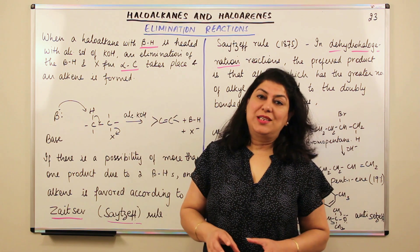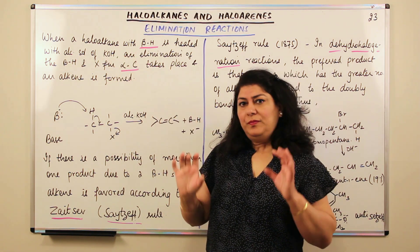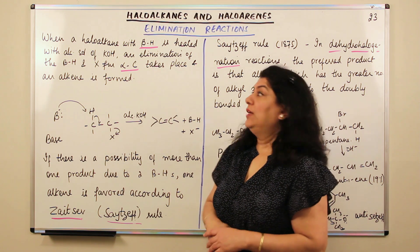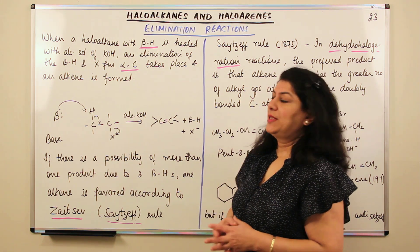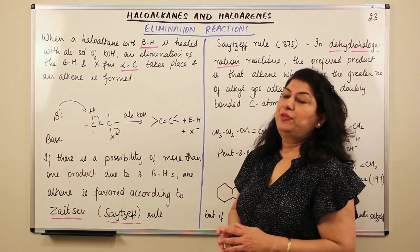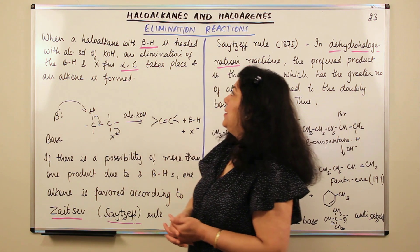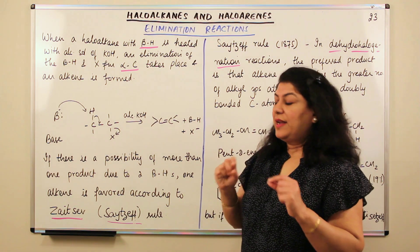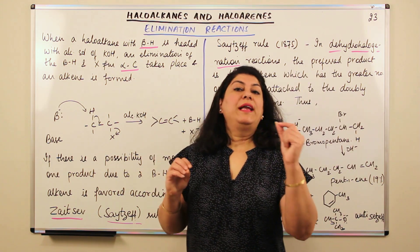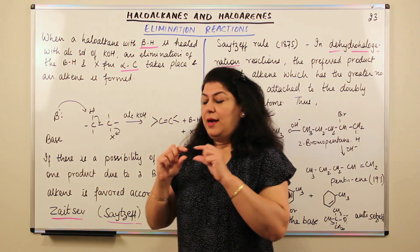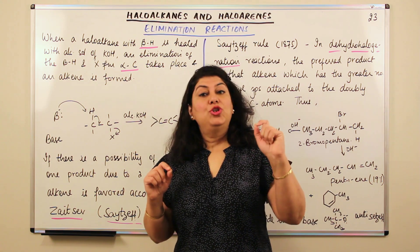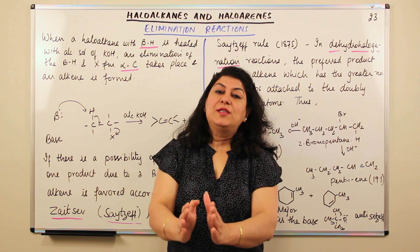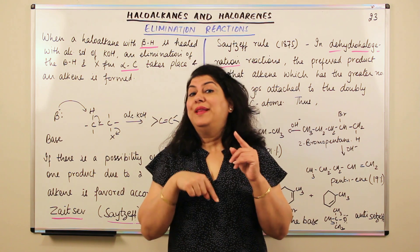Let me read this statement first so you can understand. When a haloalkane with a beta hydrogen is heated with an alcoholic solution of potassium hydroxide, an elimination of the beta hydrogen and the halogen from the alpha carbon takes place and an alkene is formed. In a haloalkane, the carbon to which the halogen is attached is known as the alpha carbon — it is the main carbon, and the properties of the compound depend on that halogen.